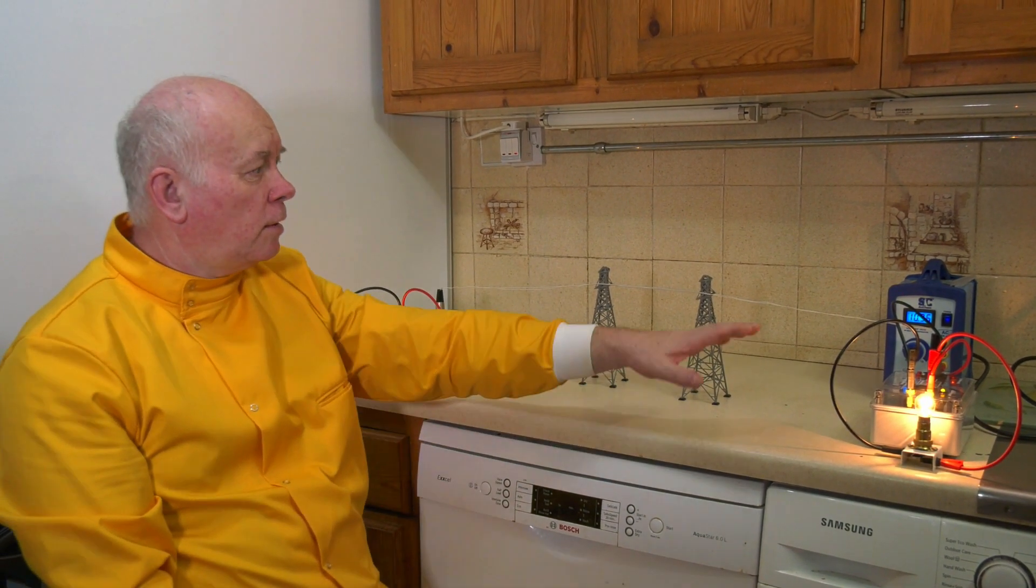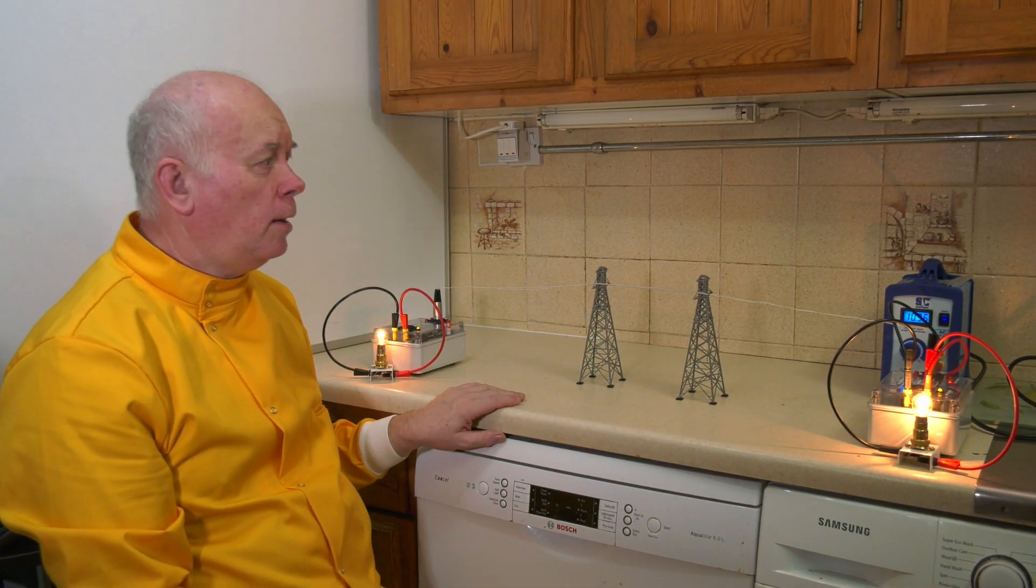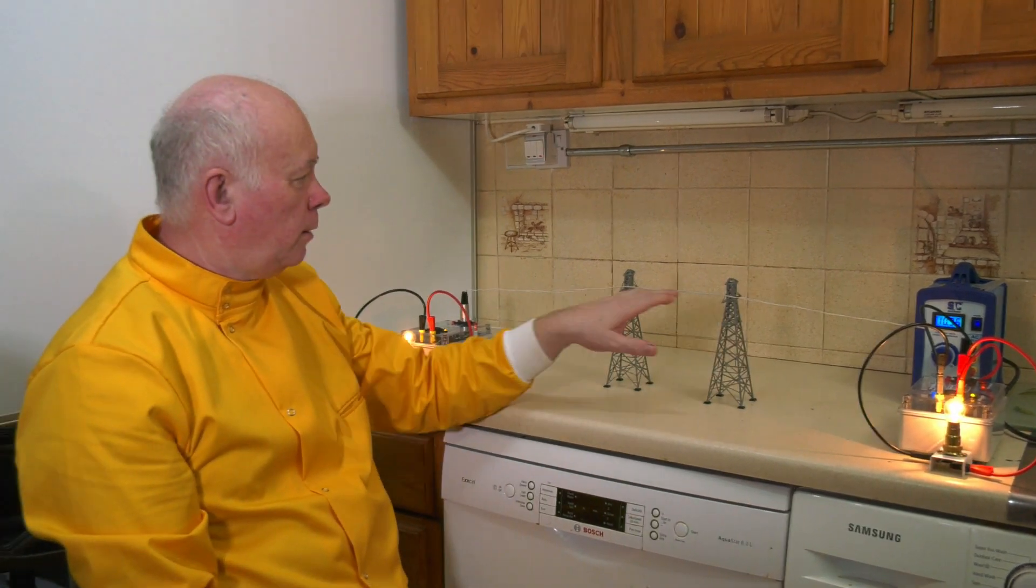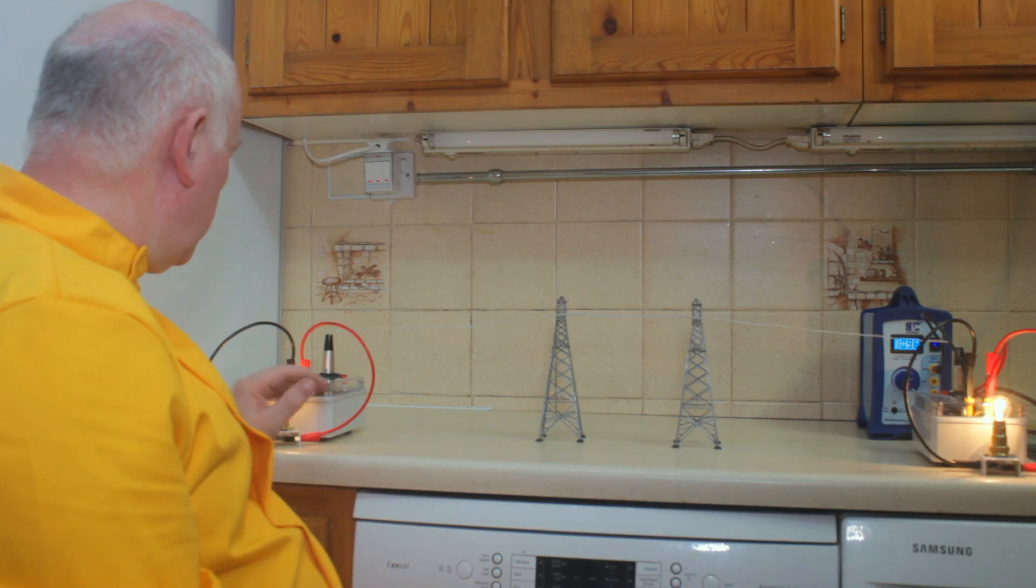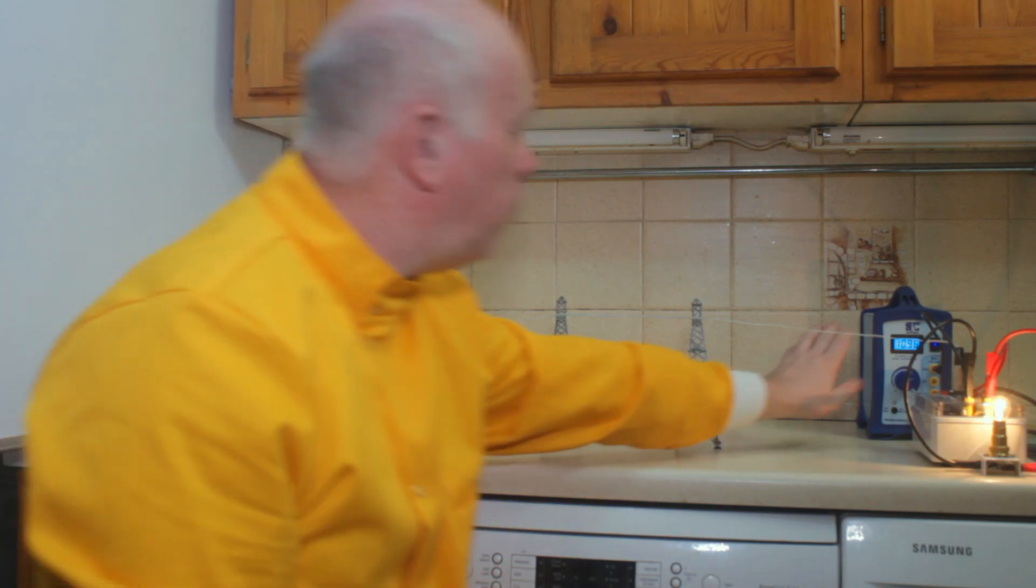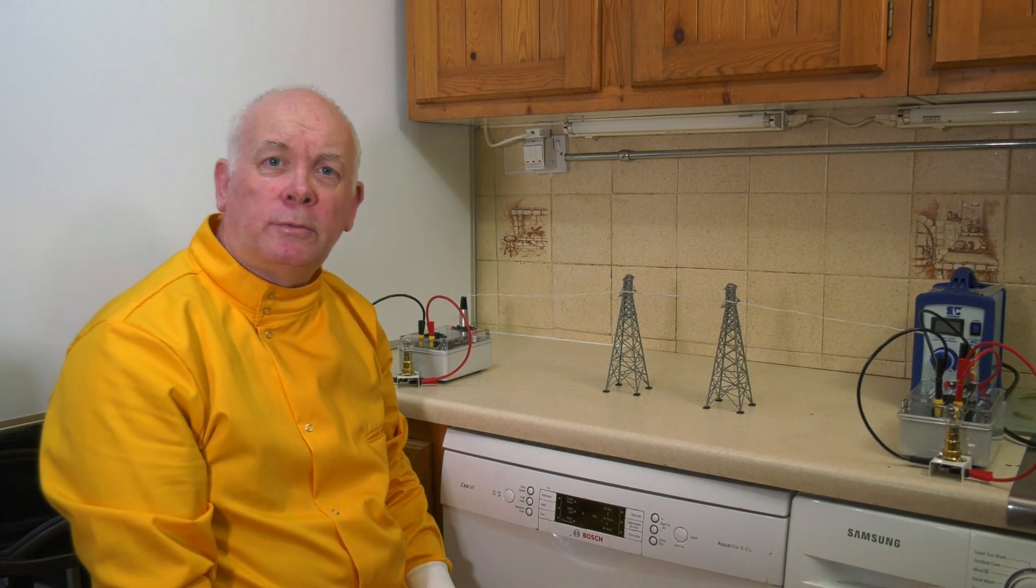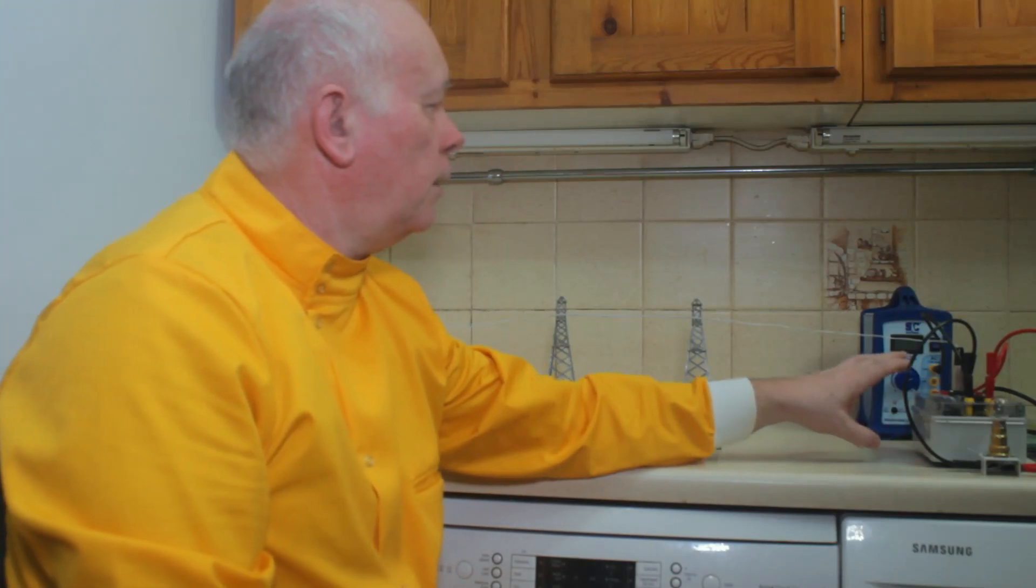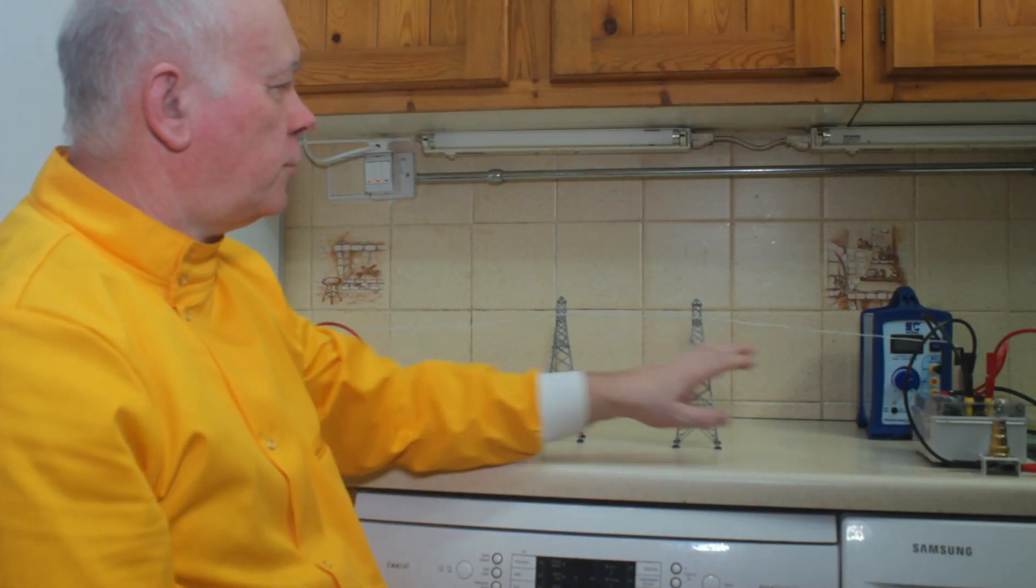This is the national grid setup. Every power station in the country is connected by a series of wires to my house, so if one power station fails, my lights will still stay on. The transformers transform the electricity.